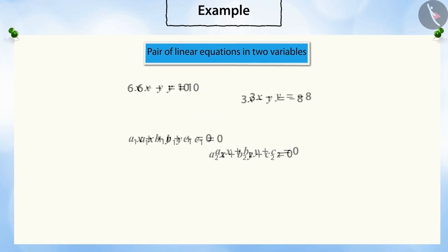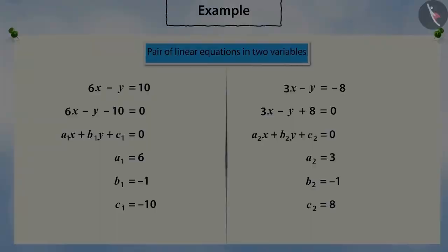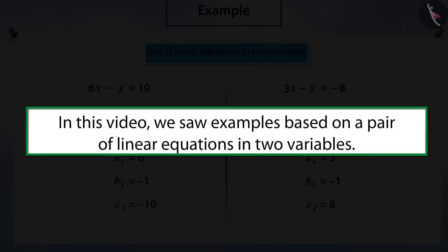Now if this equation pair is compared to the general form of a pair of linear equations in two variables, we get: a1 = 6, b1 = negative 1, c1 = negative 10, and a2 = 3, b2 = negative 1, c2 = 8. In this video, we saw examples based on a pair of linear equations in two variables. In the next video, we will see what can be the common mistakes while solving these types of questions.